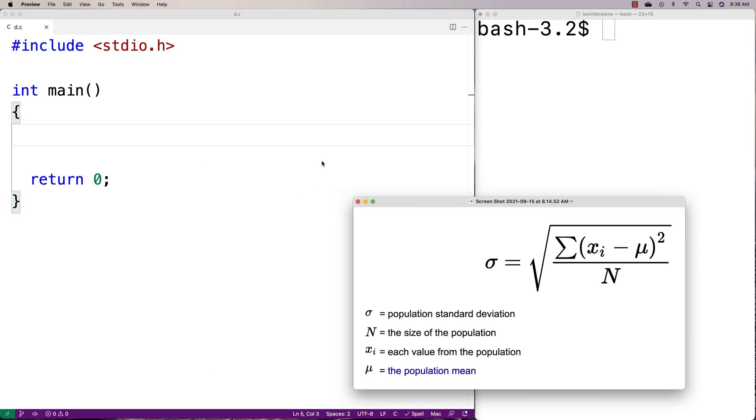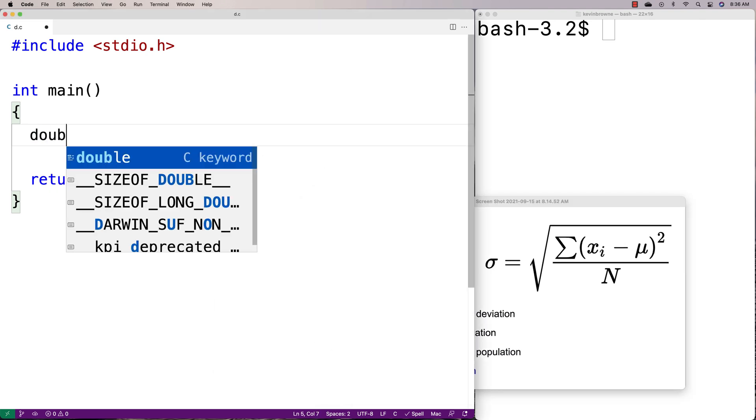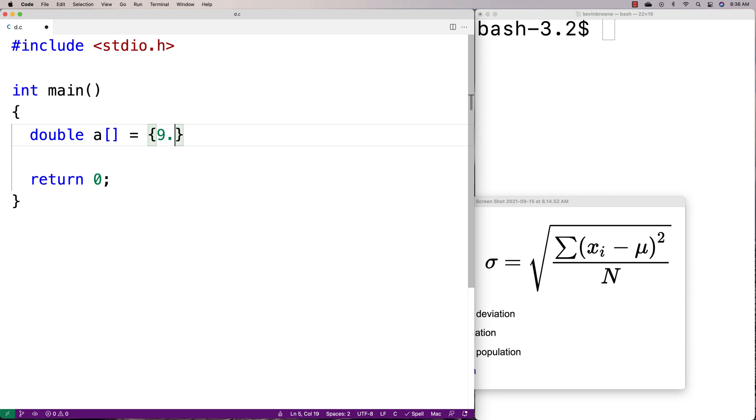First, I need an array of elements. I'll declare double A and put some random numbers here: 8.2, 5.5, maybe one more, 7.1. So we have six elements in our array.